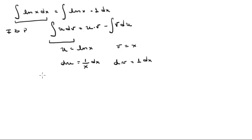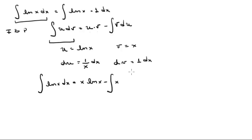So the integral of ln of x dx is equal to u times v. u is ln of x and v is x, so this gives x ln of x minus the integral of v du. v is x and du is 1 over x dx. As you can see, the x's cancel and you get the integral of 1, which is x. So the conclusion is x ln of x minus x plus c.